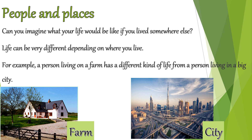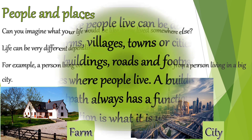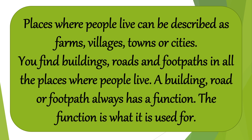In the city there's always lots of noise, but on the farm it is quiet and you can relax. The city is always fast-paced and there's a lot of concrete around you, not a lot of nature. But on the farm you can hear birds and see animals. Places where people live can be described as farms, villages, towns, or cities. You find buildings, roads and footpaths in all the places where people live, and each building, road or footpath has a function — the function is what it is used for.